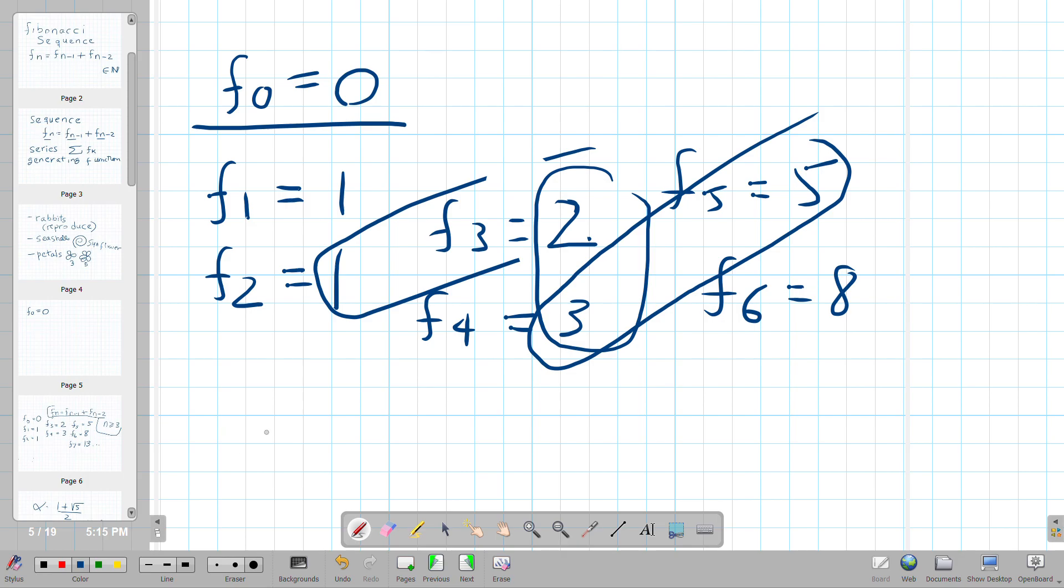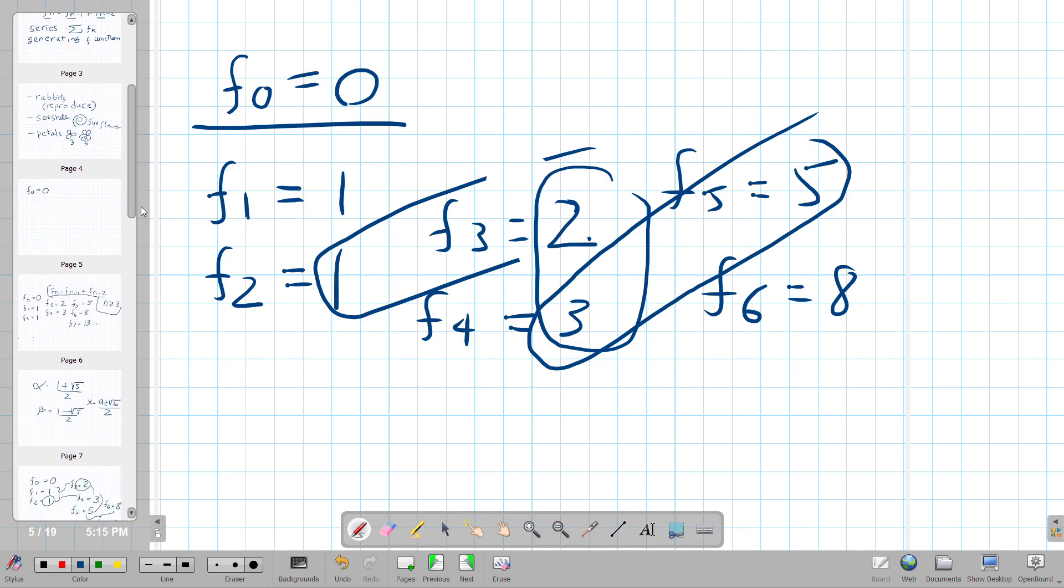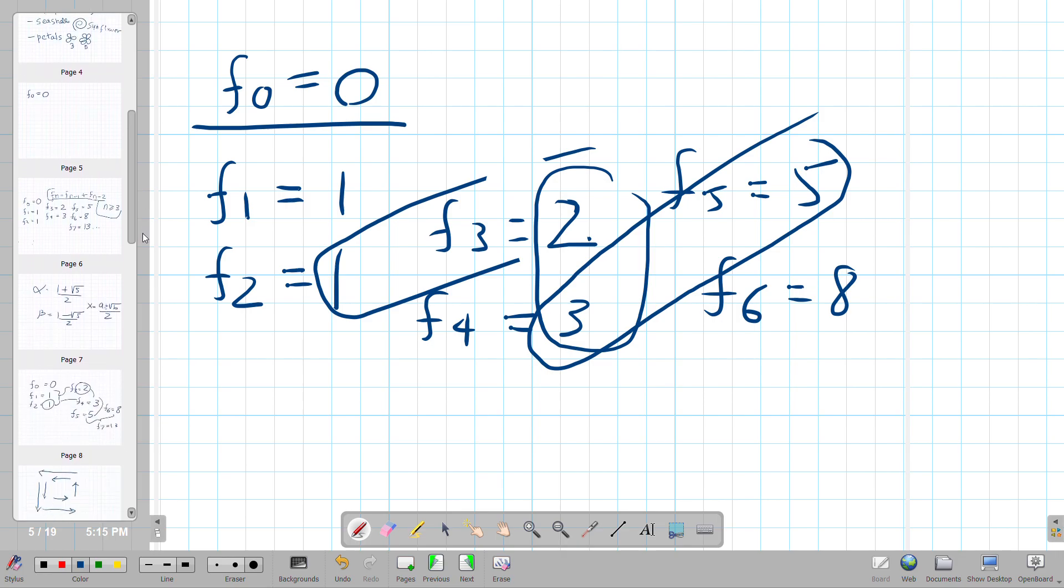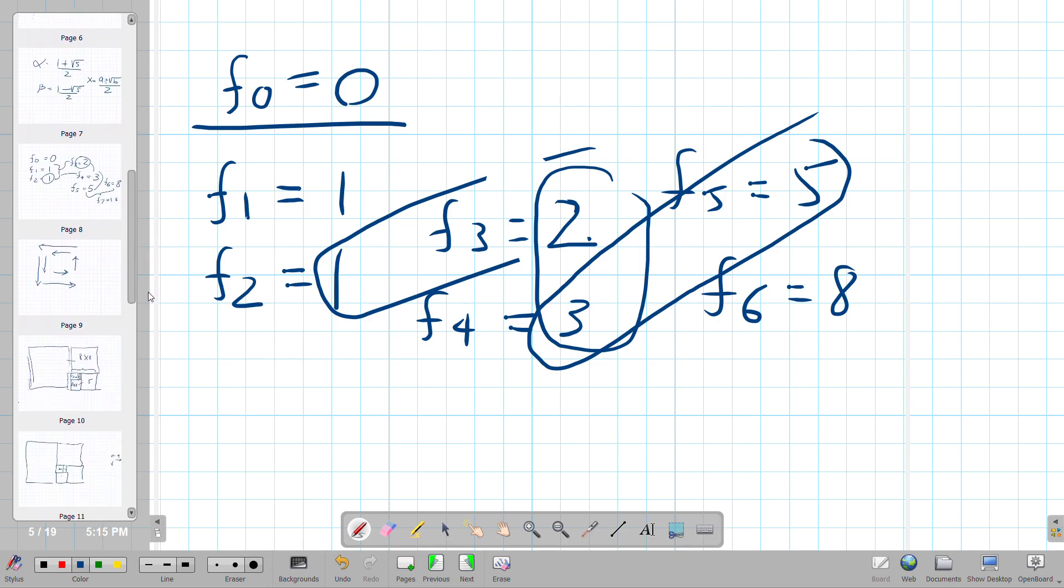Now one interesting thing to do with the Fibonacci sequence is to play with the concept of the perfect rectangle, which is an architectural theme.